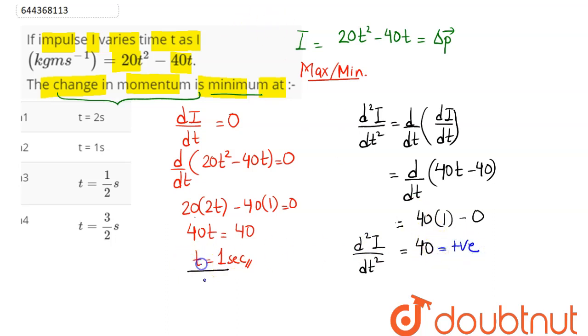this time is the time at which this quantity will be minimum. Being a change in momentum, or we can say impulse, is minimum at t = 1 second, which